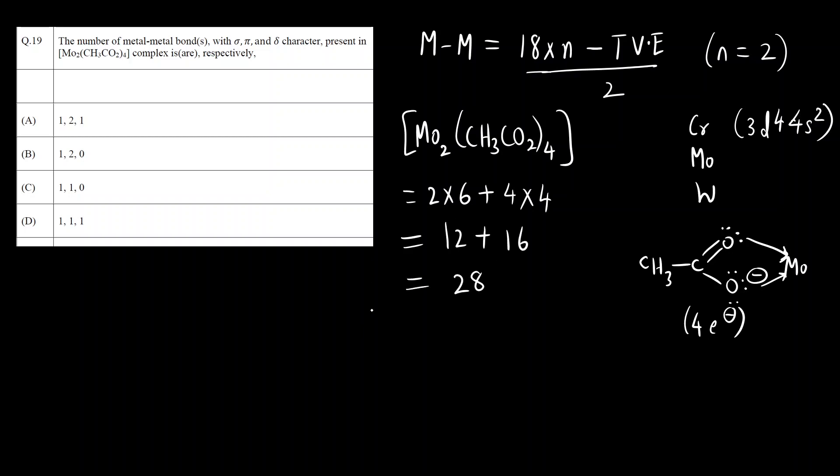Now substitute this in the formula. Number of metal-metal bonds is 18 into 2 minus 28, divided by 2. 18 into 2 is 36 minus 28 divided by 2. 36 minus 28 is 8, divided by 2 is 4. So there are 4 metal-metal bonds.